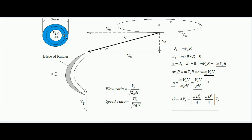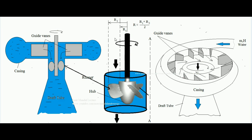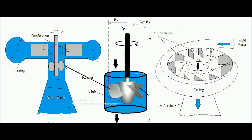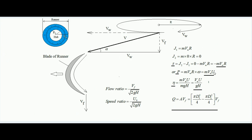In translational motion power is given by force times velocity; similarly in rotational motion power is given by torque times angular velocity. The torque developed is m·Vw·r, so the power developed over the blade is m·Vw·r·ω. Here r·ω gives the average tangential velocity of the runner, which we call u. Therefore the power expression simplifies to m·Vw·u, where u is the average tangential velocity of the runner.